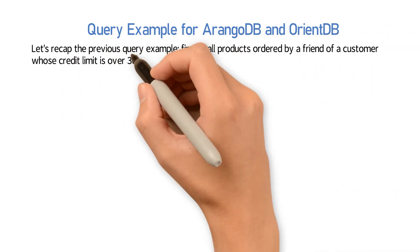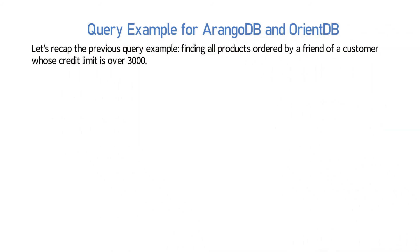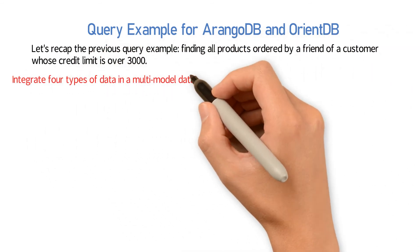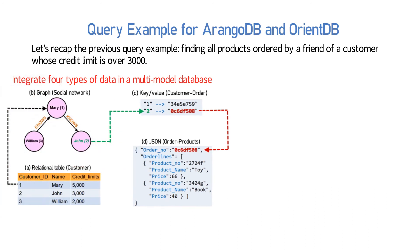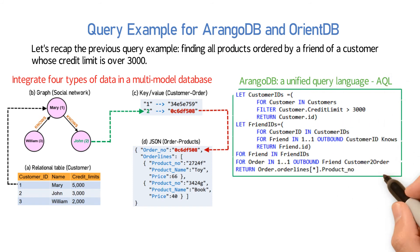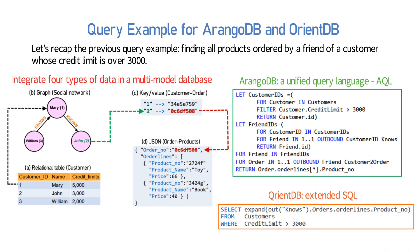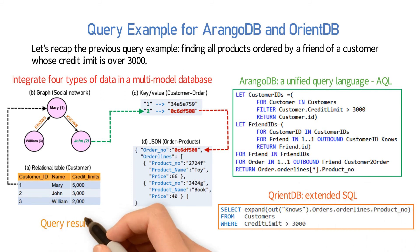Let's recap the previous query. In order to answer this query, we need to integrate these four types of data together in ArangoDB or OrientDB. In ArangoDB, a unified query language called AQL is used to do the query. Different from ArangoDB, OrientDB extends the standard SQL to support both graph and tree operations.